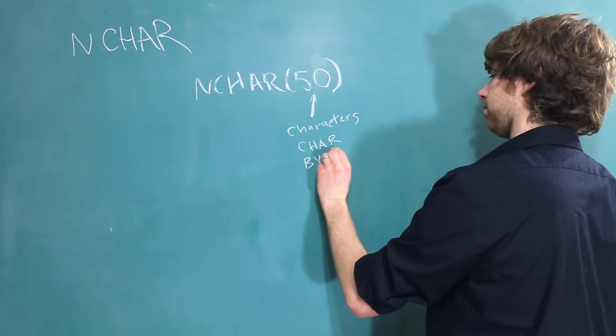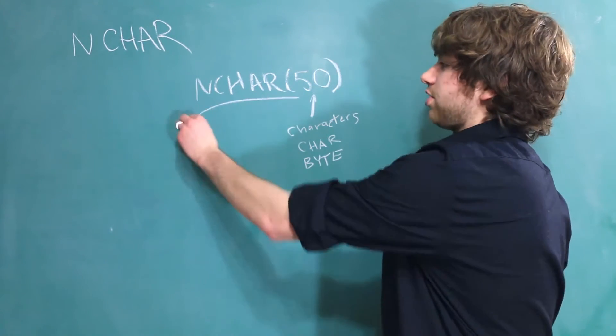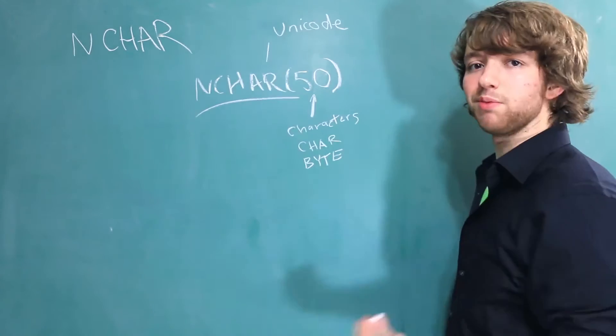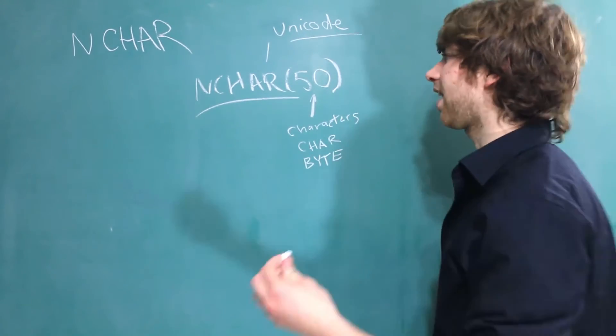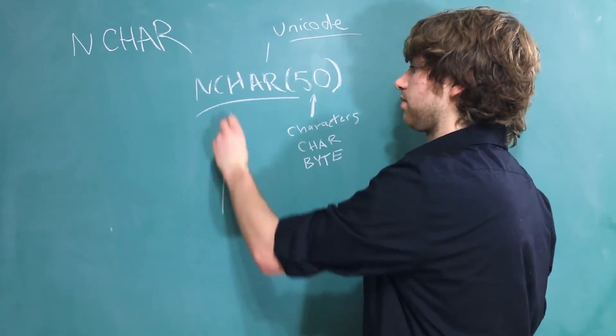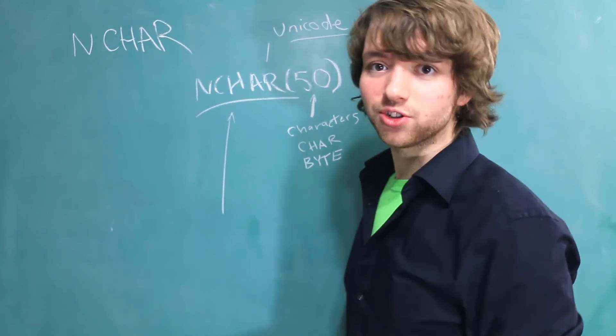Now we've mentioned that the n char data type uses unicode. But remember that Oracle has multiple unicode character sets. So what character set does n char use? That is a very good question, and I'm gonna answer it.